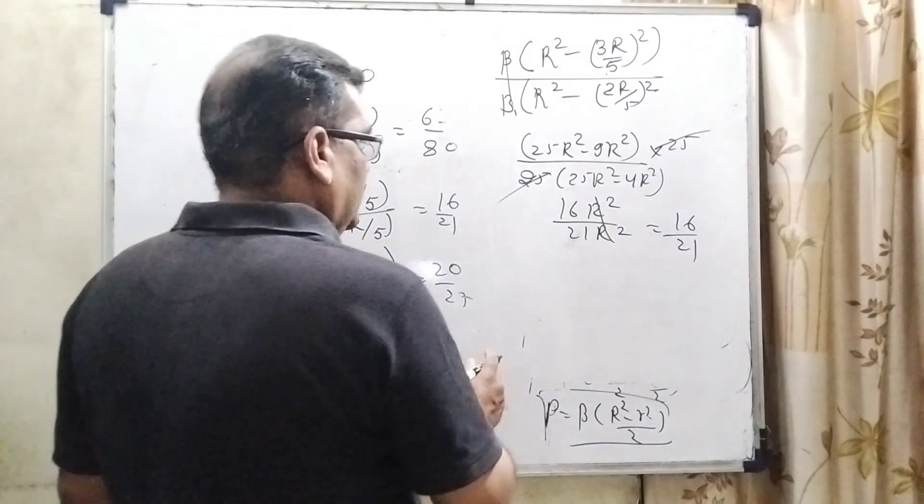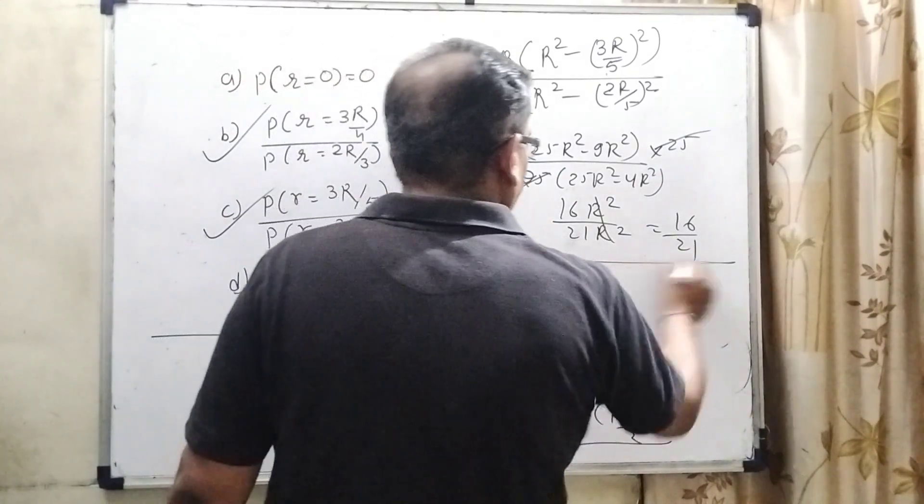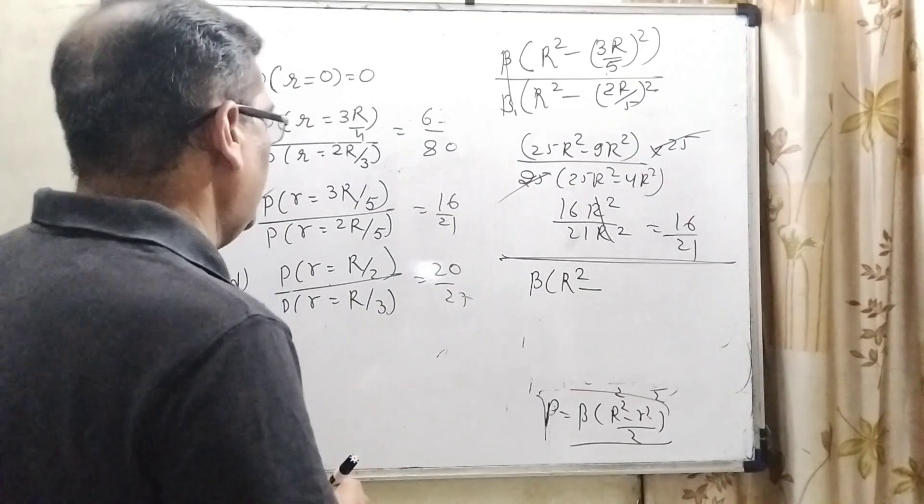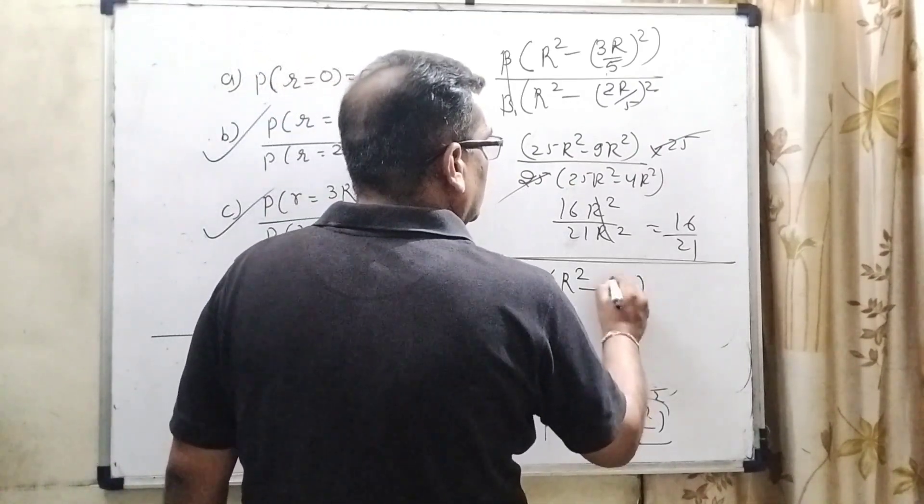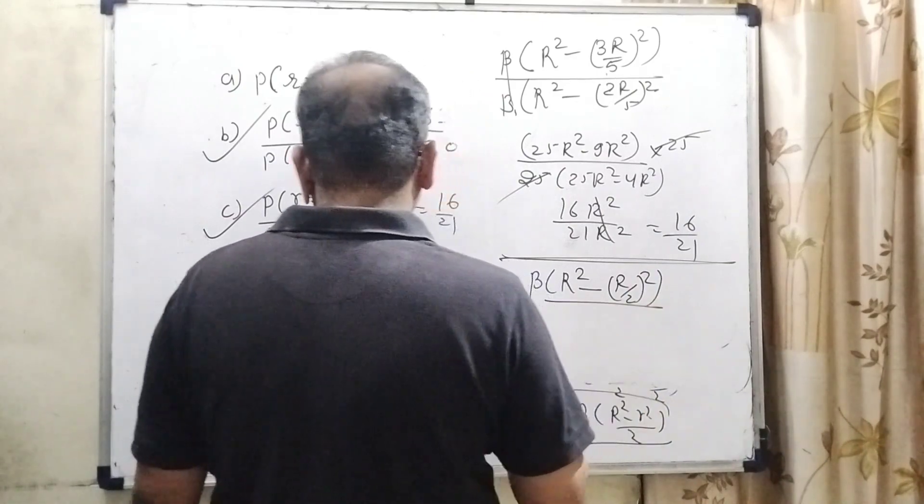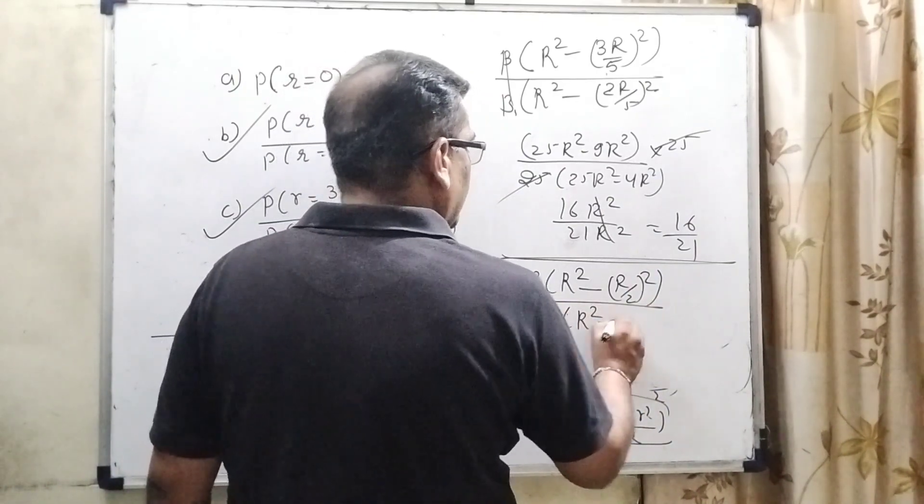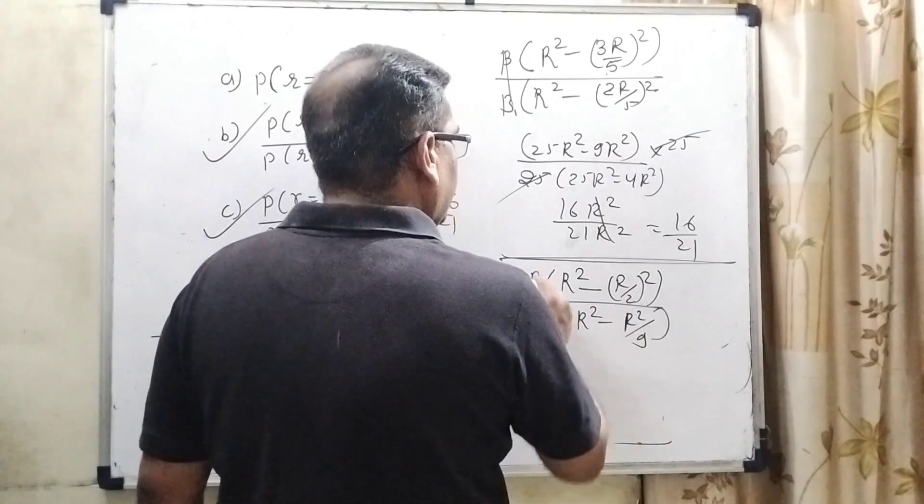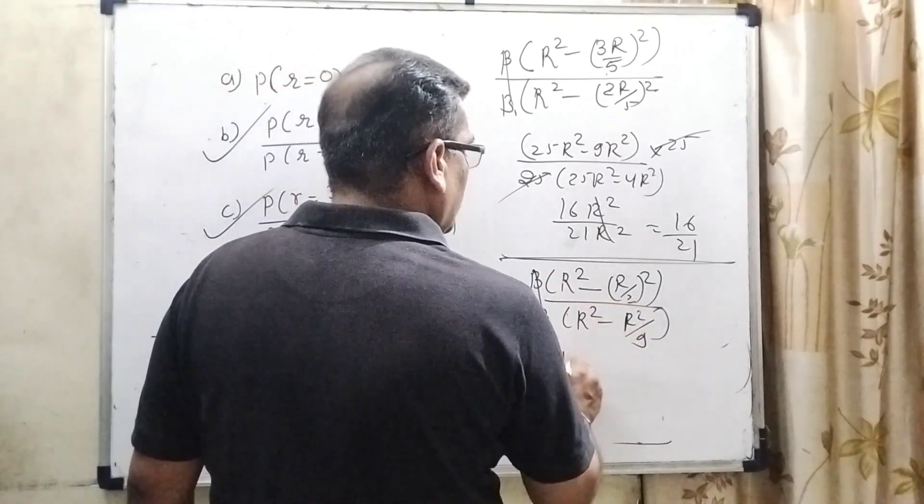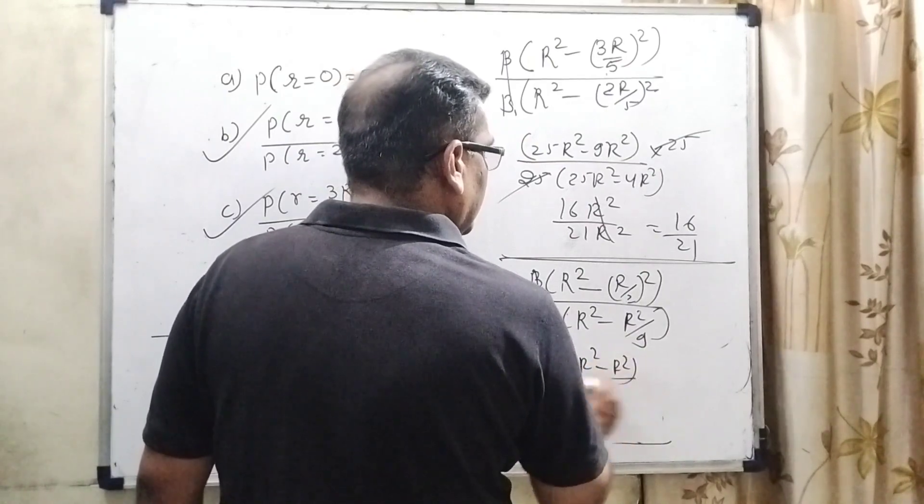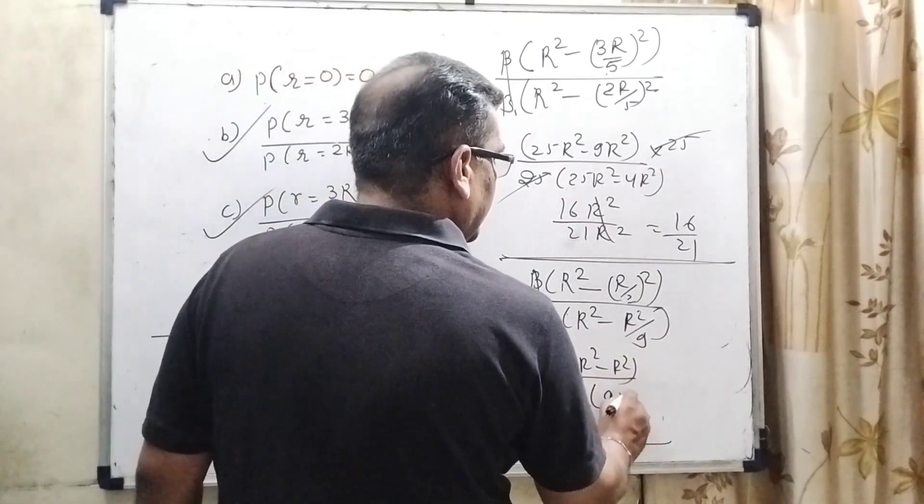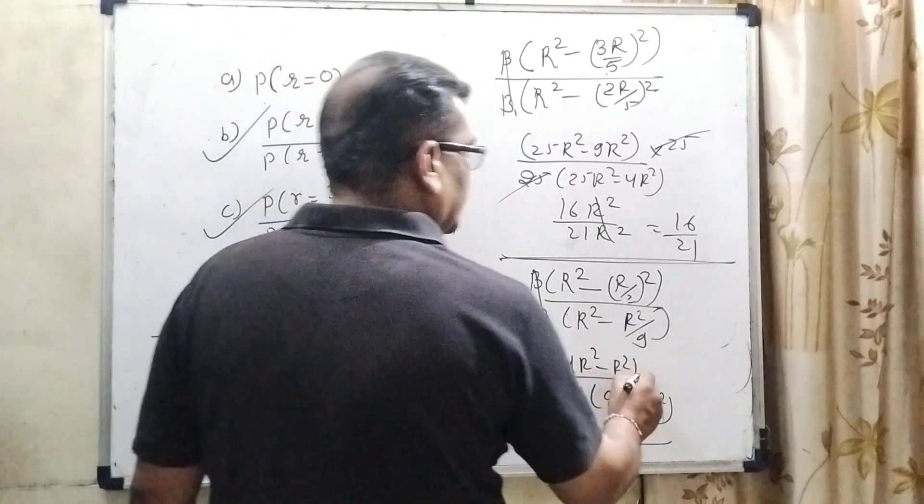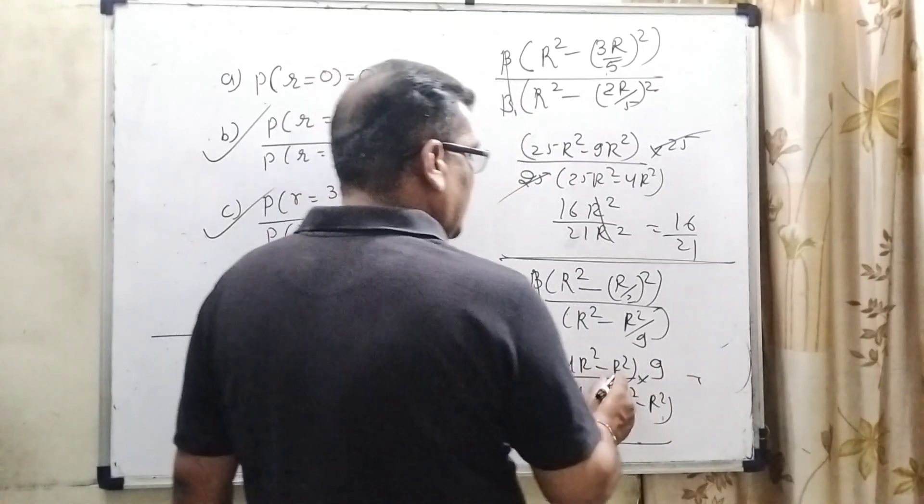Now remaining, again substitute the value for the last value. Beta into bracket r square minus, what is the value of small r? R by 2 whole square upon beta into bracket r square minus r by 3, means r square by 9. Now it can be written, beta beta cancels out, 2 square means 4, r square minus r square upon 4, this 9 square, 9 r square minus r square and this 9 goes in numerator. Then how much? This is 3 r square.